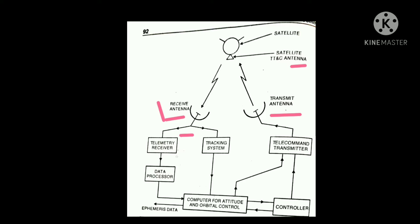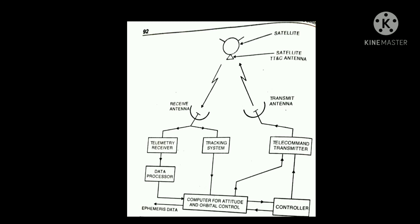The receiving antenna is connected to the telemetry receiver, data processor, computer for control, and orbit control subsystem. These are also connected with the tracking system. The main function of the tracking system is to track the location of the satellite — from earth station to satellite and satellite to the second earth station. The satellite is also connected to the transmitting antenna, telemetry and telecommand transmitter, and a controller which performs all operations of controlling the earth station and satellite.